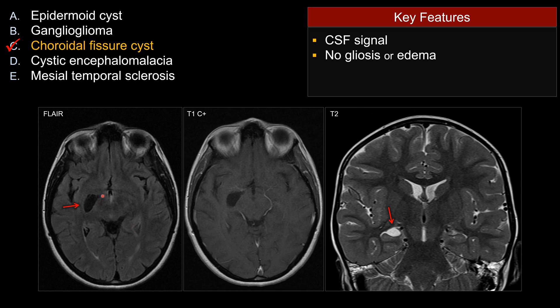On FLAIR, you also see no abnormal signal surrounding the cyst. So there's no evidence of gliosis or acute parenchymal edema. There's no enhancement. So everything we see so far has a benign imaging characteristic, and this is what choroidal fissure cyst should be — benign.